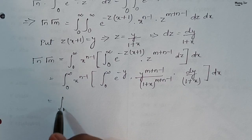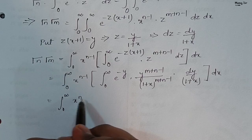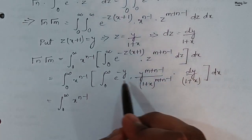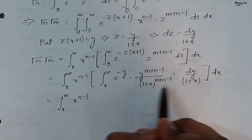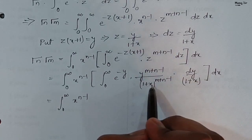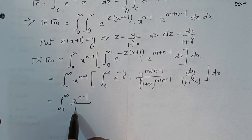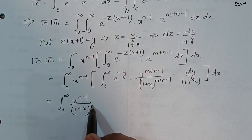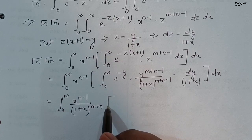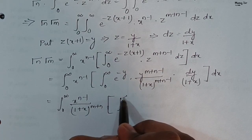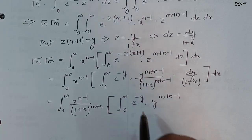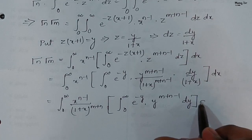So this equals integration from 0 to infinity of x to power n minus 1 upon (1 plus x) power m plus n, times the bracket: integration from 0 to infinity of e to the power minus y times y power m plus n minus 1 dy, then dx. The inner bracket is gamma of m plus n.